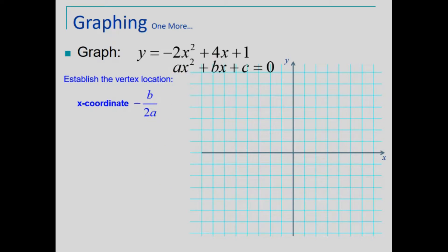Replacing b and a with the values of the equation gives us the following. Simplifying, we find that the x-coordinate of the vertex is x equals 1.